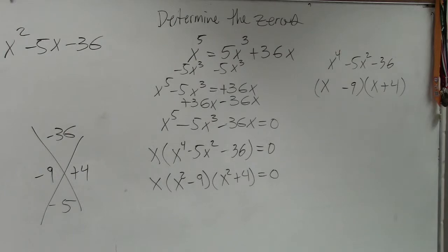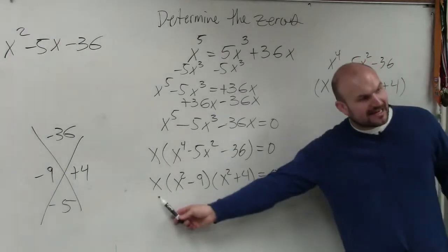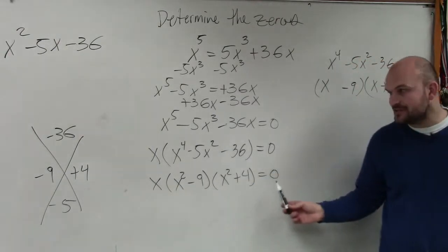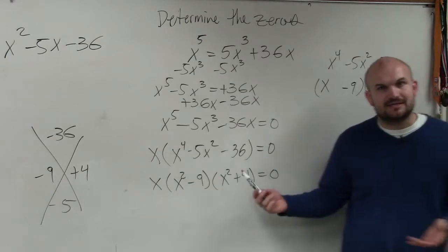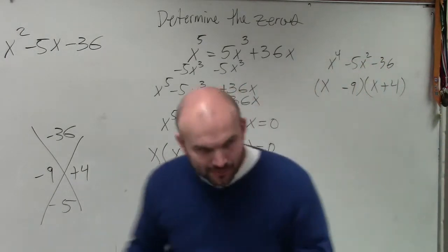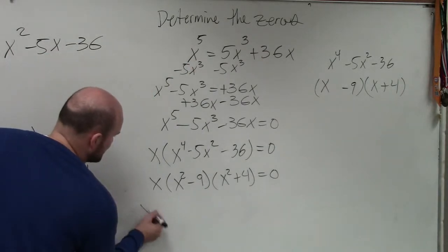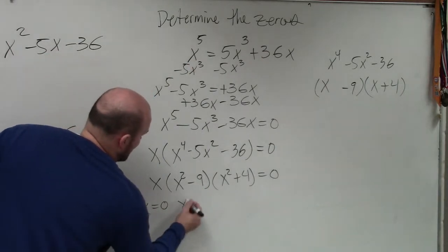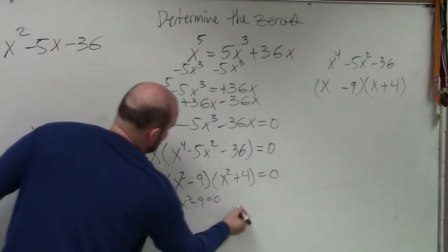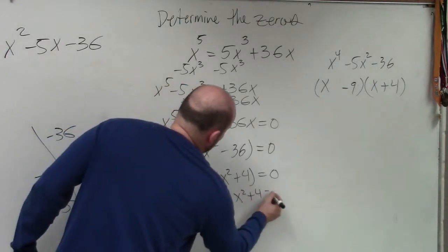Now, you guys remember the last example you said, oh, I don't know what to do when I had like five of them. Now, you guys can see I have three factors. When I have three factors and I want to solve for them, what do I need to do? I need to now apply the zero product property, which is going to tell me to set them all equal to 0. So I say x equals 0, x squared minus 9 equals 0, and x squared plus 4 equals 0.